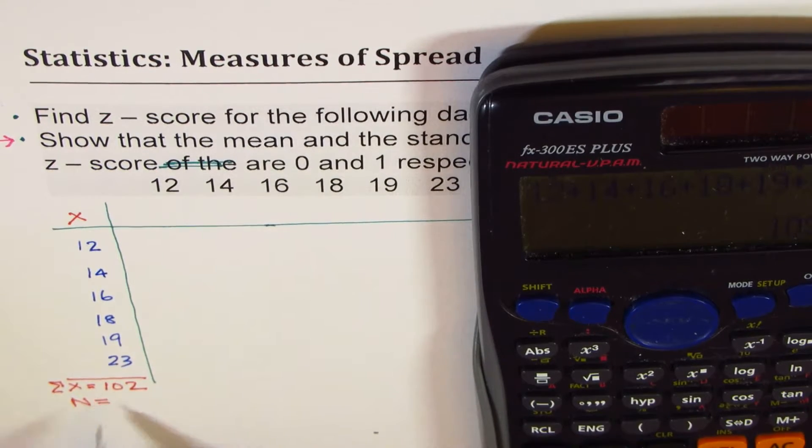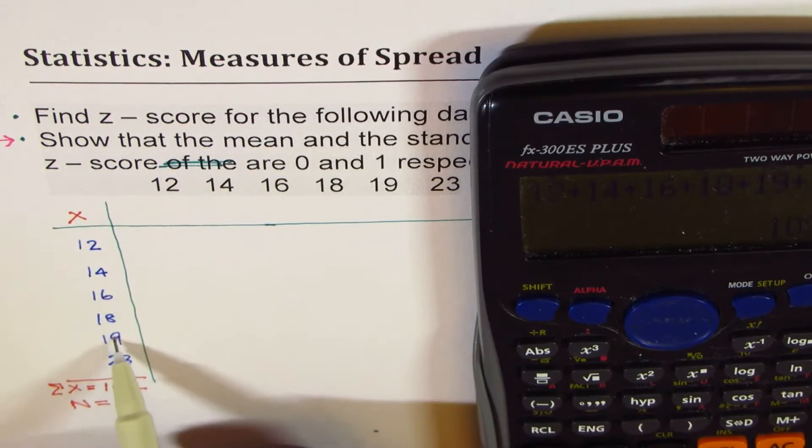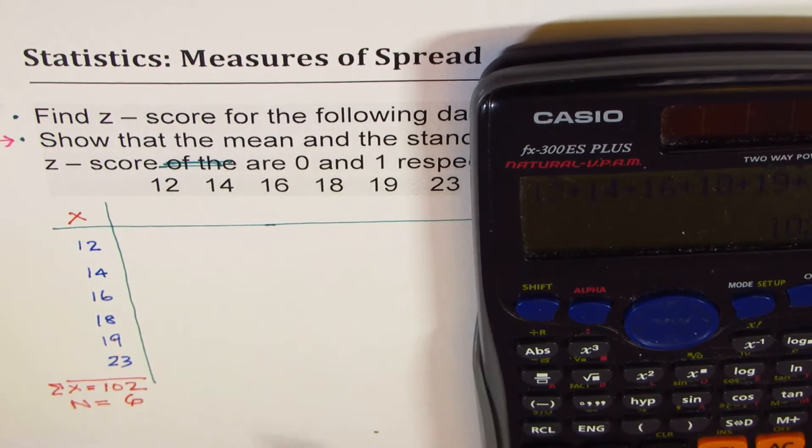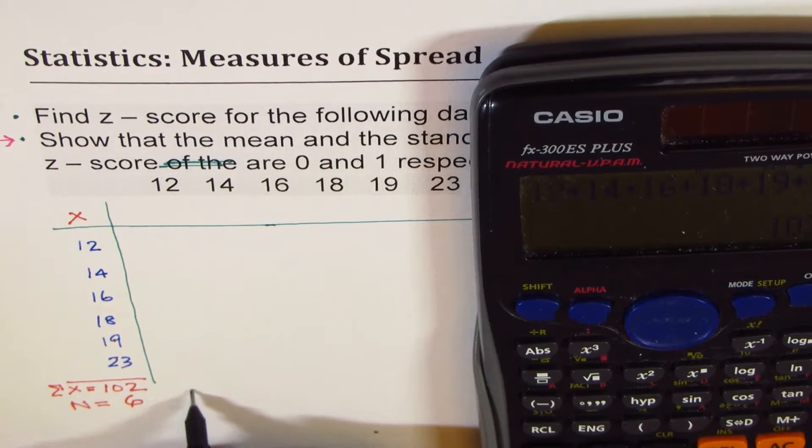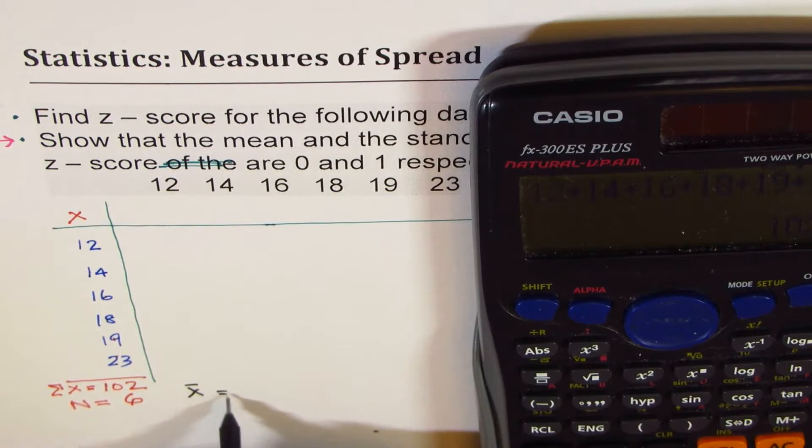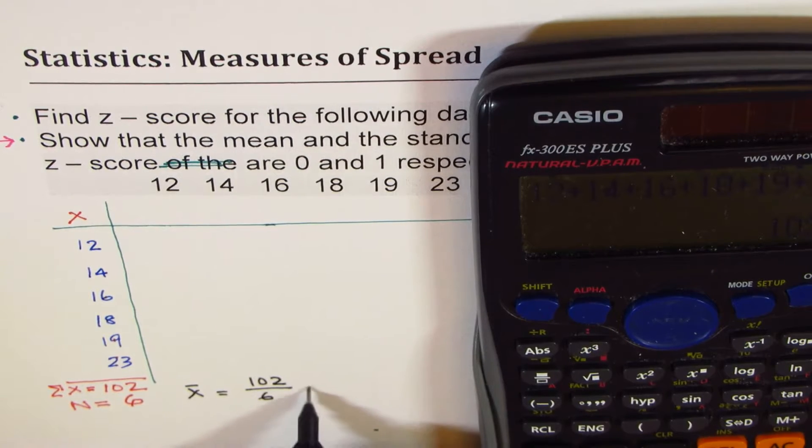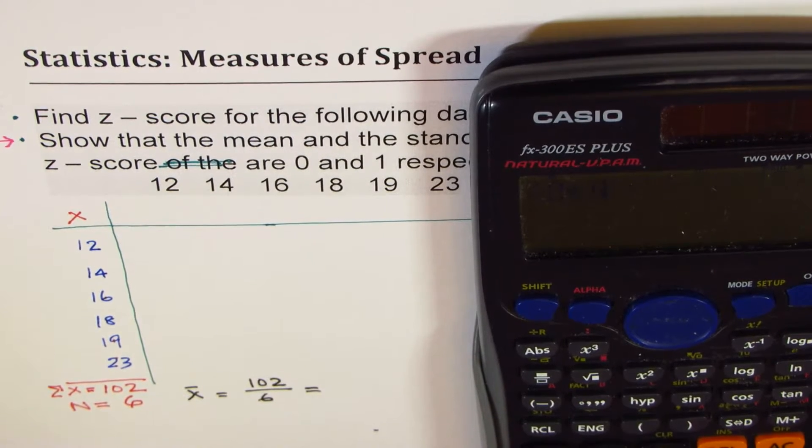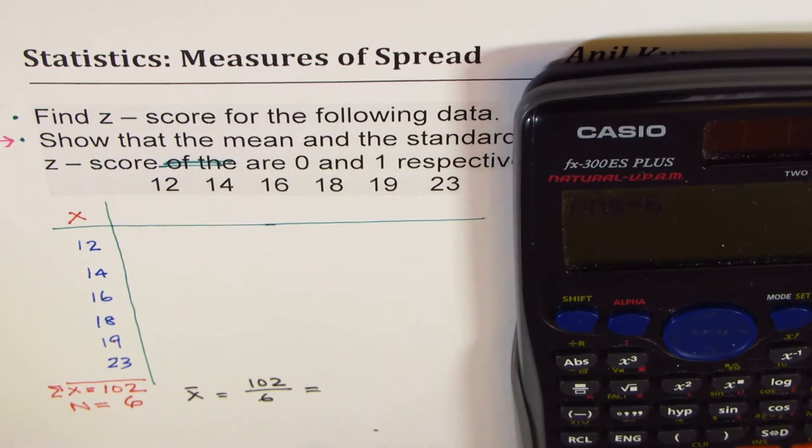Now, what is n equals to? N equals to 1, 2, 3, 4, 5, 6. And once we know that, then you can always find mean. So mean will be equals to ratio of these two. So 102 divided by 6, which is, so we get the mean 17.